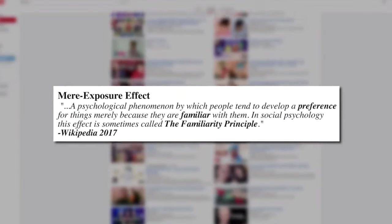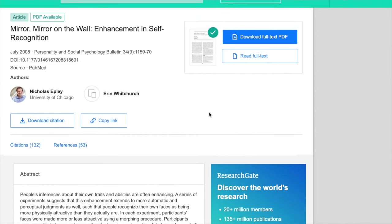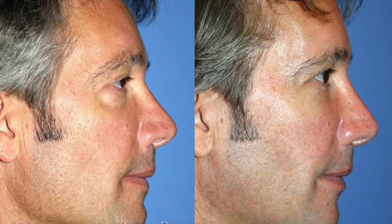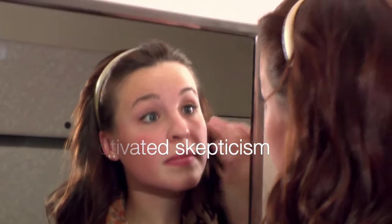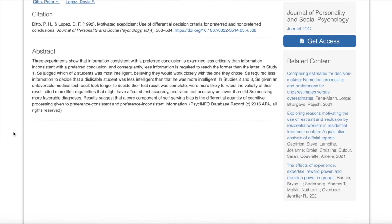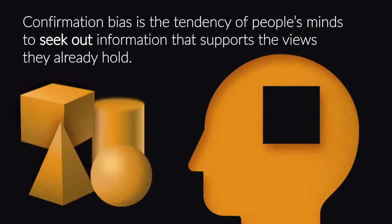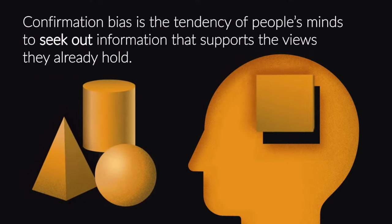Another study on self-perception showed subjects altered versions of their own face. The study concluded that participants were more likely to believe that their altered, more attractive face was actually them, rather than their real, non-edited photo. Another psychological effect is that when presented with negative information, we are quite critical and tend to dismiss it completely, whereas if something aligns with our positive self-image, we tend to accept it with no questions asked. This creates a loop: since we believe the mirrored version is how we look, we prefer it, and since we prefer it, we believe that's how we actually look.